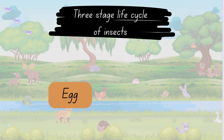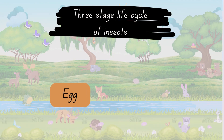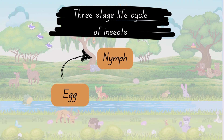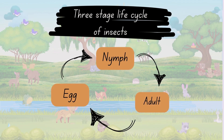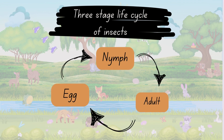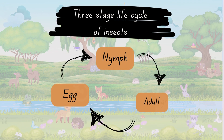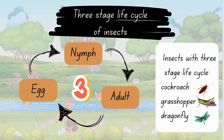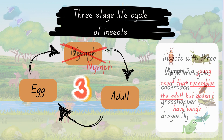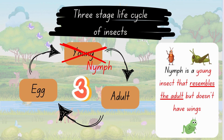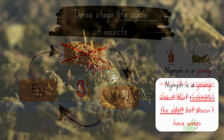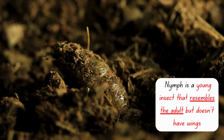The stages in a three-stage life cycle of an insect are egg, nymph, adult. Insects which have three stages are cockroaches, grasshoppers, dragonflies, and more. A nymph is a young insect that resembles the adult but doesn't have wings.